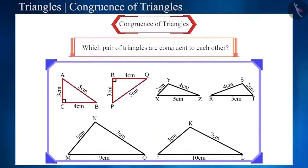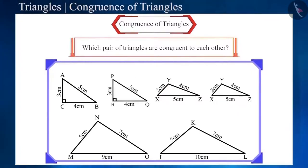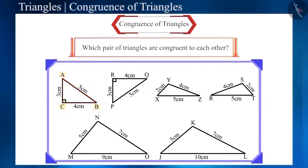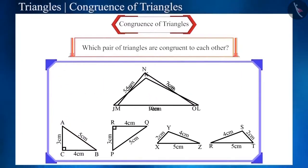Friends, we can see the congruent pair of triangles by keeping the corresponding equal sides on top of each other. The vertex, sides and angles of the triangles are fitting exactly on each other and the triangles that are not congruent are not covering each other completely.